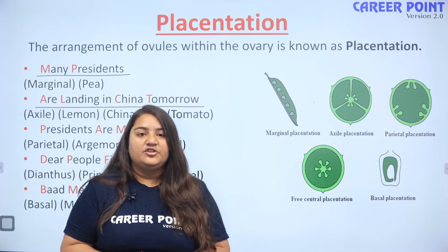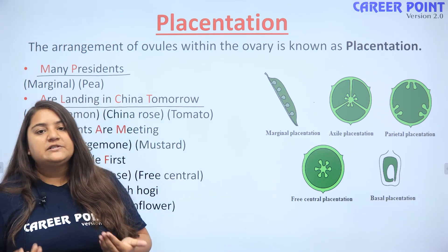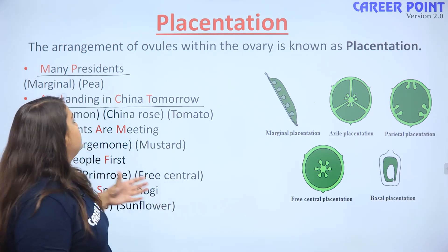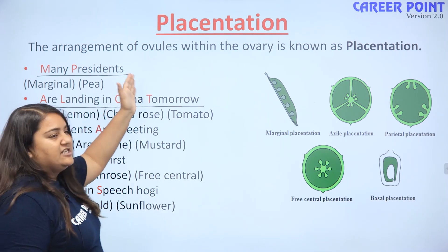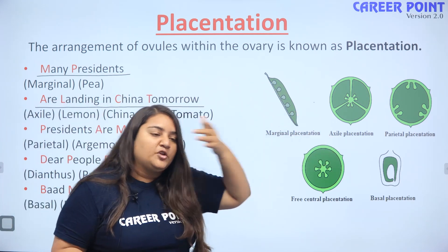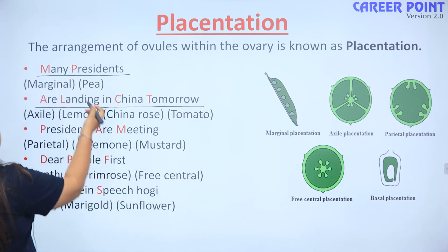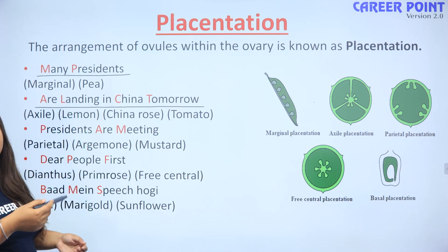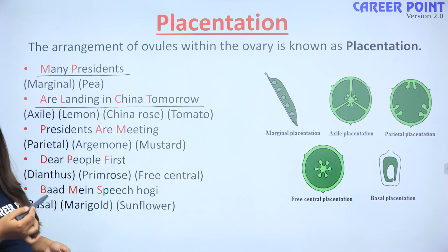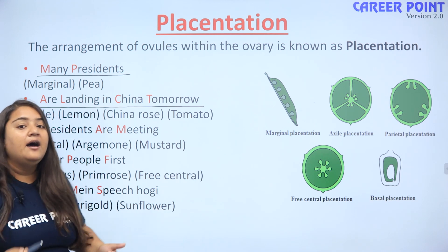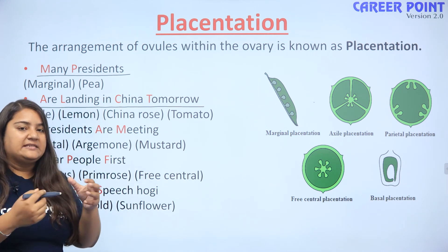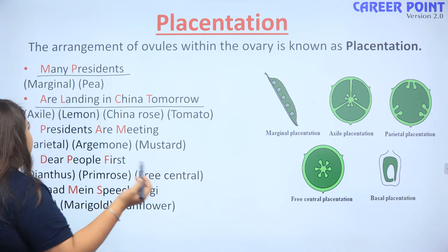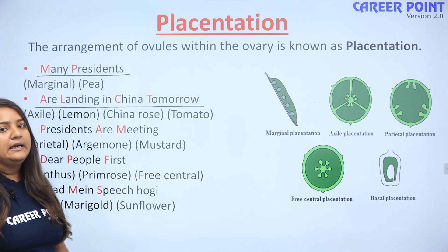Next, placentation pe aate hain. Placentation kya hoti hai? It is the arrangement of the ovules in the ovary — basically the location of the ovules in the ovary. Is ke liye maine kuch sentences mein mnemonics banai hain. Un sentences ko yaad rakhenge, jisse hume placentation ke sare examples with the type of placentation yaad ho jayegi.